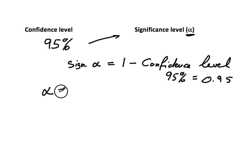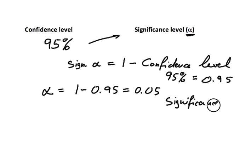1 minus 0.95 equals 0.05. So this would be our significance level.